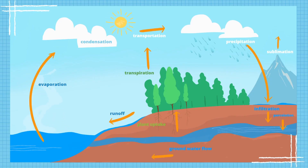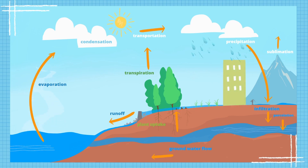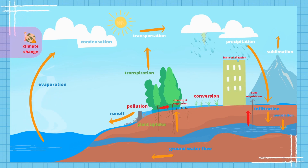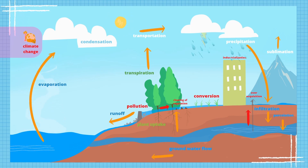Unfortunately, this process within Earth's hydrosphere is not perfect. When we introduce human activity into this model, the dynamics of the water cycle change immensely because of pollution, deforestation and vegetation clearing, conversion of land, industrialization, and over-acquisition of water. Such activities also exacerbate the effects of climate change.